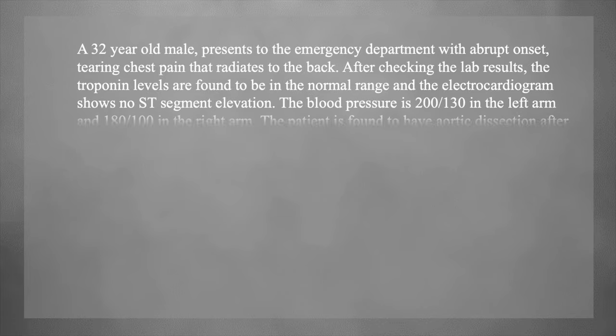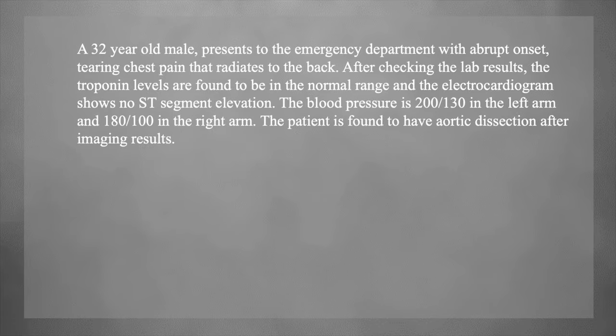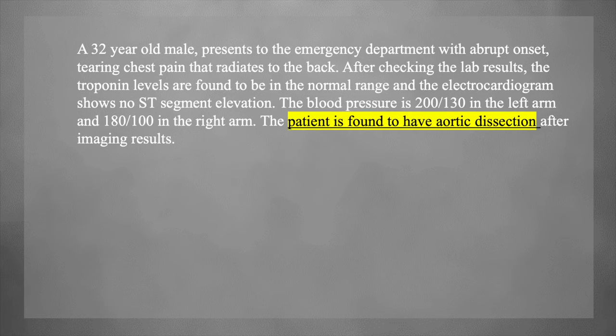For example, a question might say a 32-year-old male comes to the emergency department with tearing chest pain that radiates from the chest to the back, and there's a difference in blood pressure between two arms. While reading this, you'd realize it's aortic dissection — but maybe that's not what they're asking. Maybe the question already mentions it's aortic dissection and they want your next step in management. So read the last line first, then read the options to understand what's being asked, then start reading from the top.